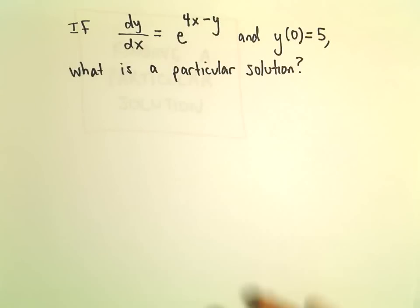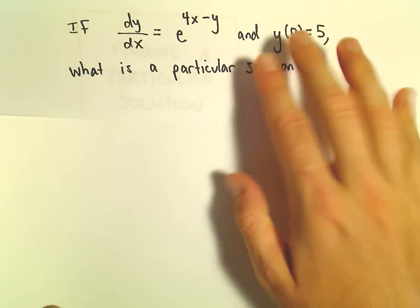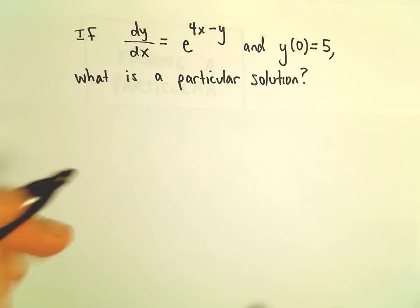Here we're going to do another example of finding a particular solution. We have dy/dx = e^(4x-y) and y(0) = 5. We want to find a particular solution.